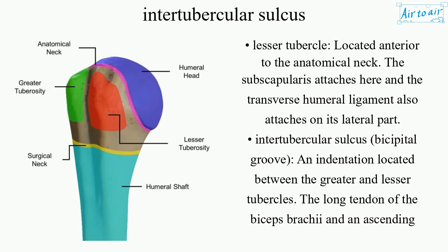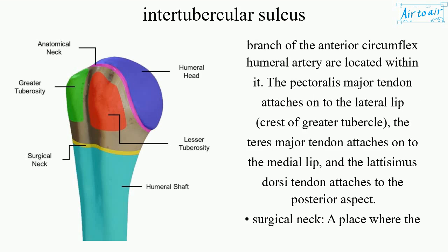Intertubercular sulcus, also known as the bicipital groove: an indentation located between the greater and lesser tubercles. The long tendon of the biceps brachii and an ascending branch of the anterior circumflex humeral artery are located within it. The pectoralis major tendon attaches onto the lateral lip (crest of greater tubercle), the teres major tendon attaches onto the medial lip, and the latissimus dorsi tendon attaches to the posterior aspect.